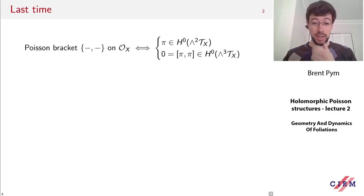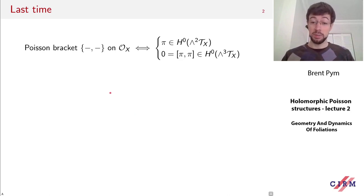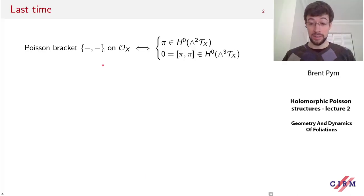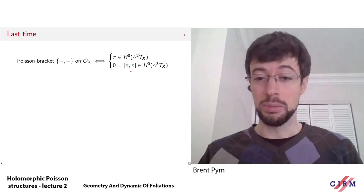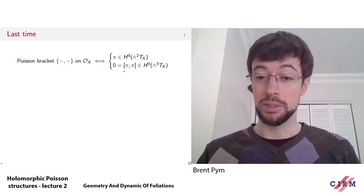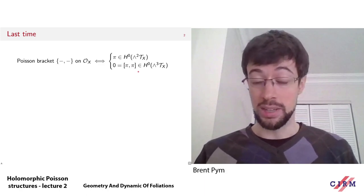Let's begin by recalling what happened last time. A Poisson bracket on a manifold X — which for us is a complex manifold or variety — is a bilinear operation on functions which is a Lie bracket: skew-symmetric and satisfying the Jacobi identity, and also a derivation in each argument. We saw that you could equivalently encode that in the data of a tensor pi, which is a holomorphic section of wedge two of the tangent bundle, and the Jacobi identity corresponds to the PDE that the Schouten bracket of pi with itself is equal to zero. This is a nonlinear PDE satisfied by this tensor.